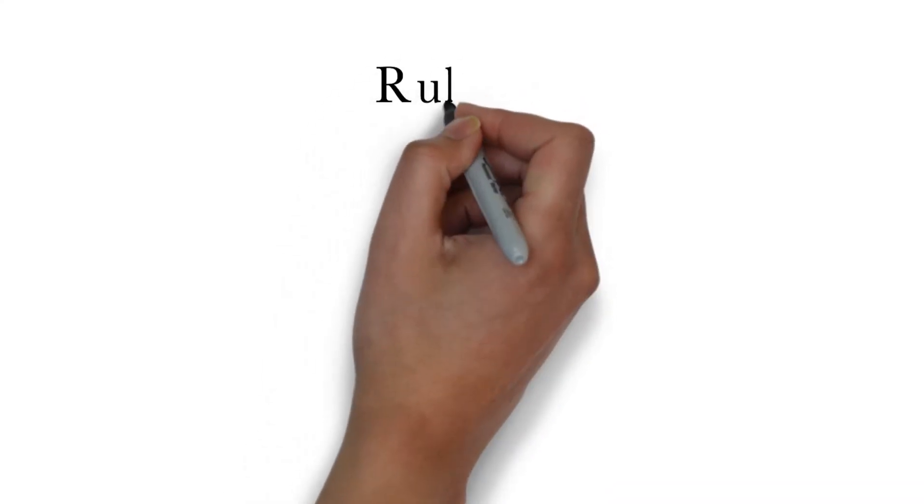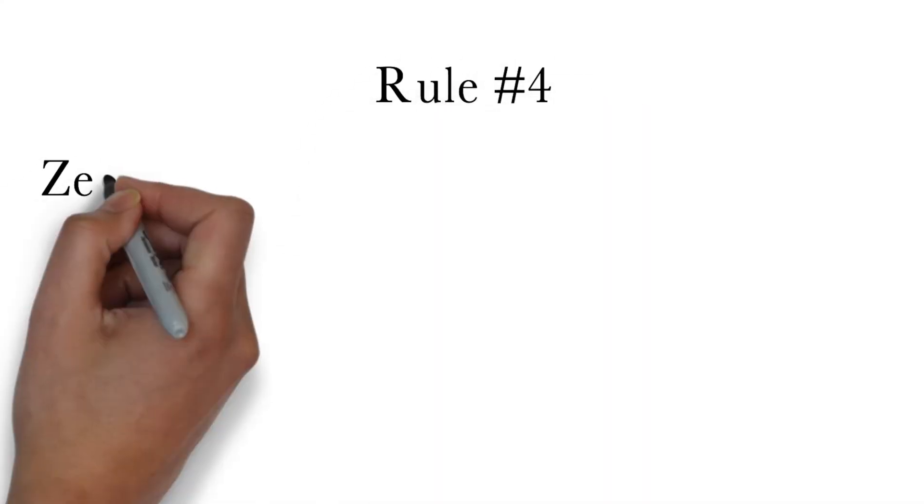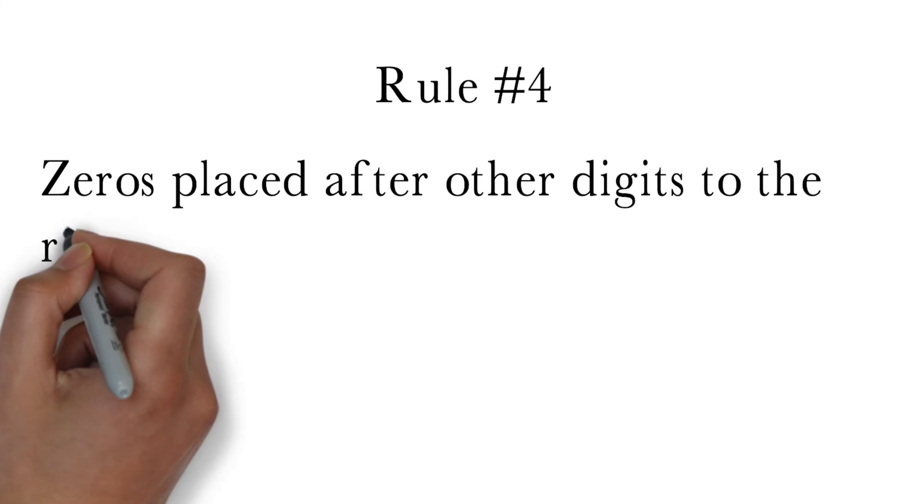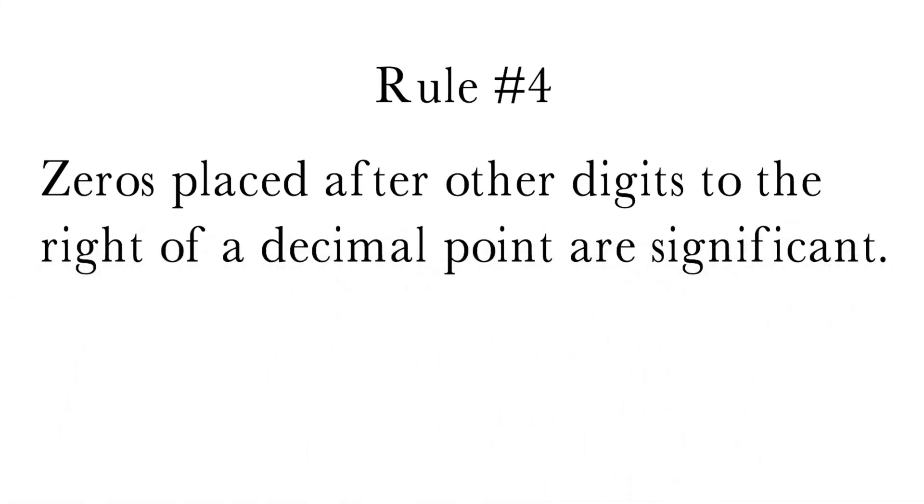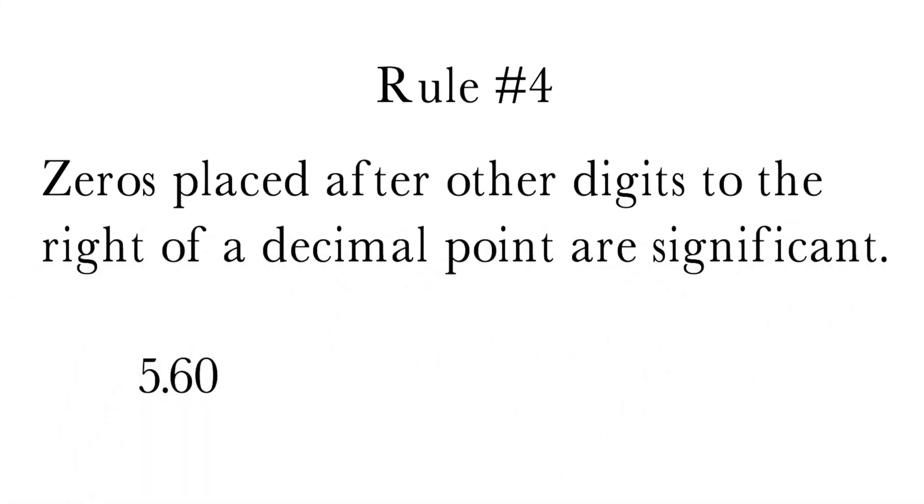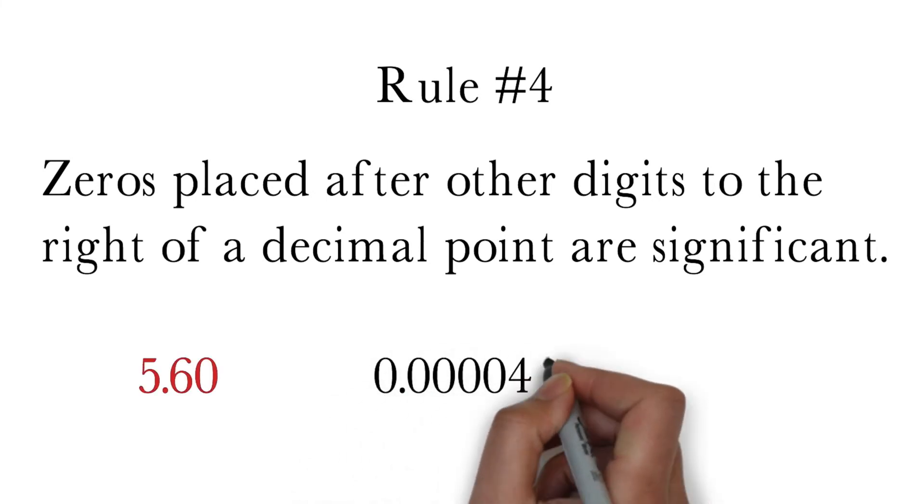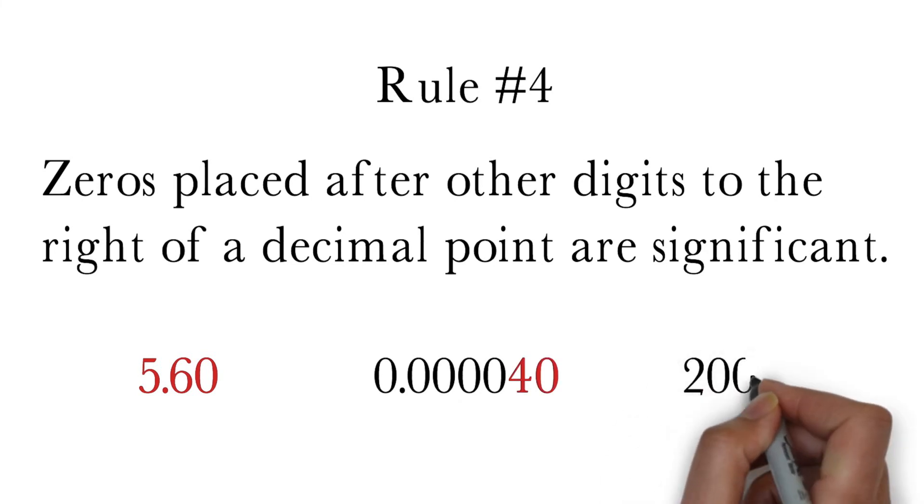The fourth rule of significant digits is zeros placed after other digits to the right of a decimal point are significant. For example, 5.60 has three significant digits, 0.000040 has two significant digits, and 200.0 has four significant digits.